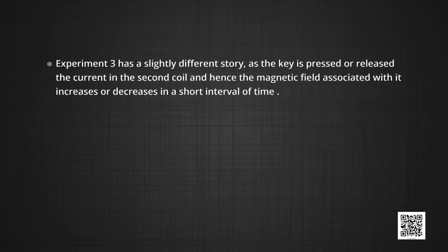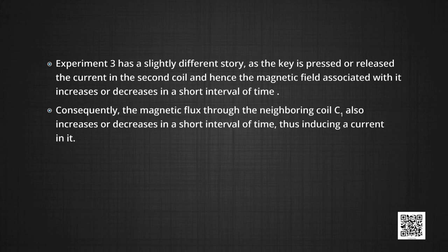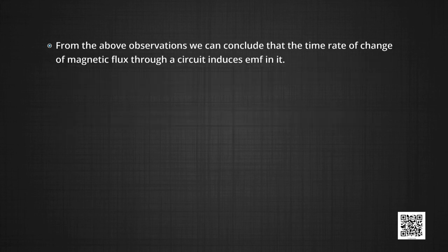Experiment 3 has a slightly different story. As the key is pressed or released, the current in the second coil and hence the magnetic field associated with it increases or decreases in a short interval of time. Consequently, the magnetic flux through the neighboring coil C1 also increases or decreases in a short interval of time, thus inducing a current in it without any relative motion between the two coils. From these observations, we can conclude that the time rate of change of magnetic flux through a circuit induces EMF in it.